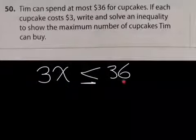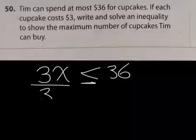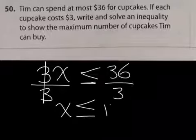I already can tell you that it's 12, right? Because 3 times 12 is 36. And it can be equal to it or less. So this number, the maximum it can be is 12. But let's go ahead and solve it. Divide by 3. Divide by 3. X is less than or equal to 12.